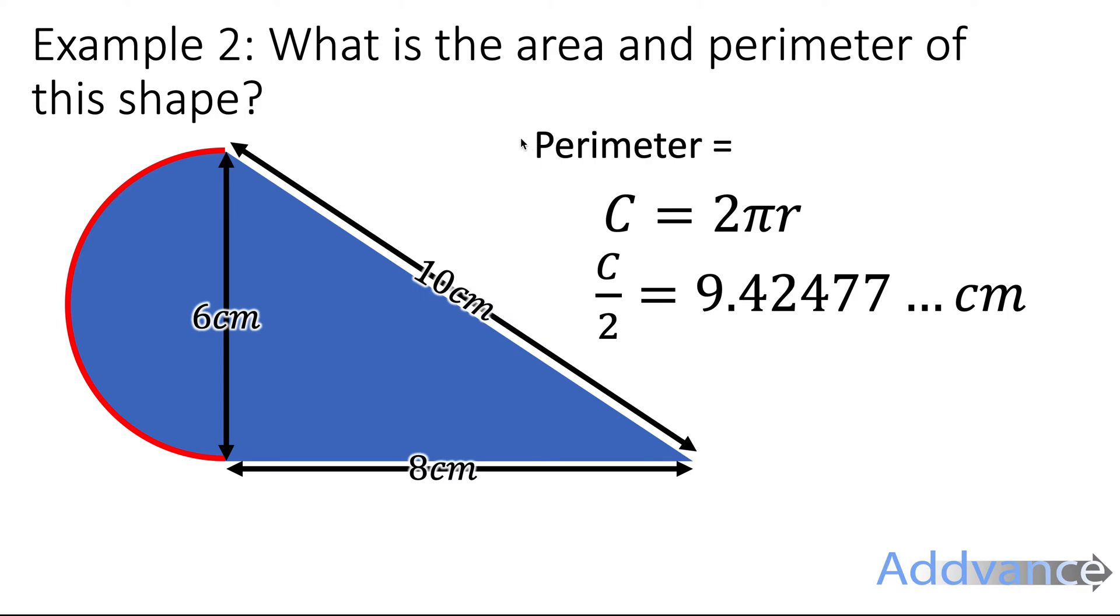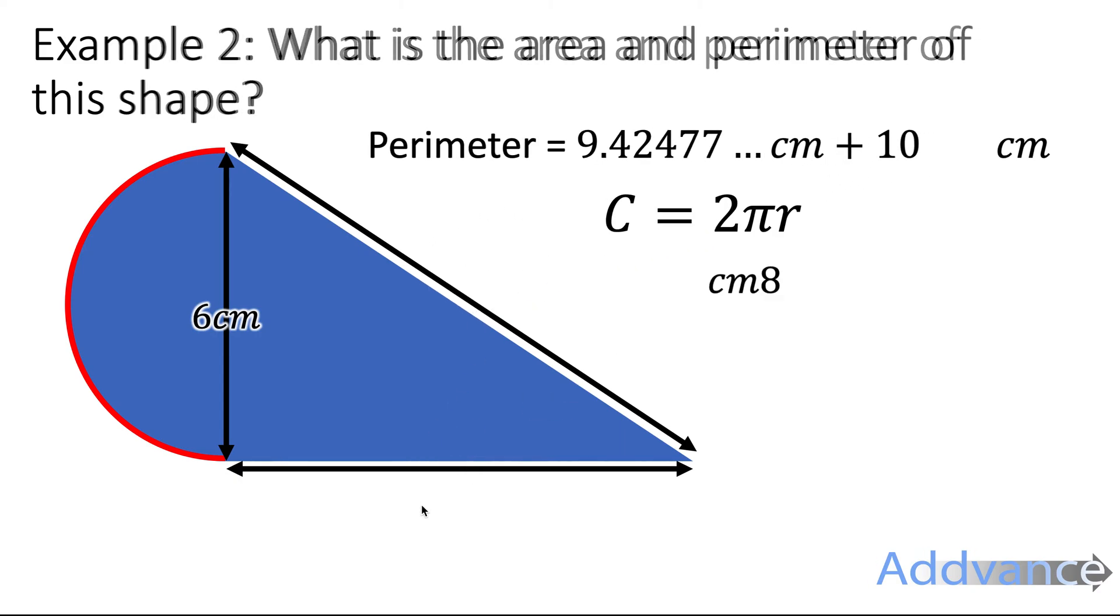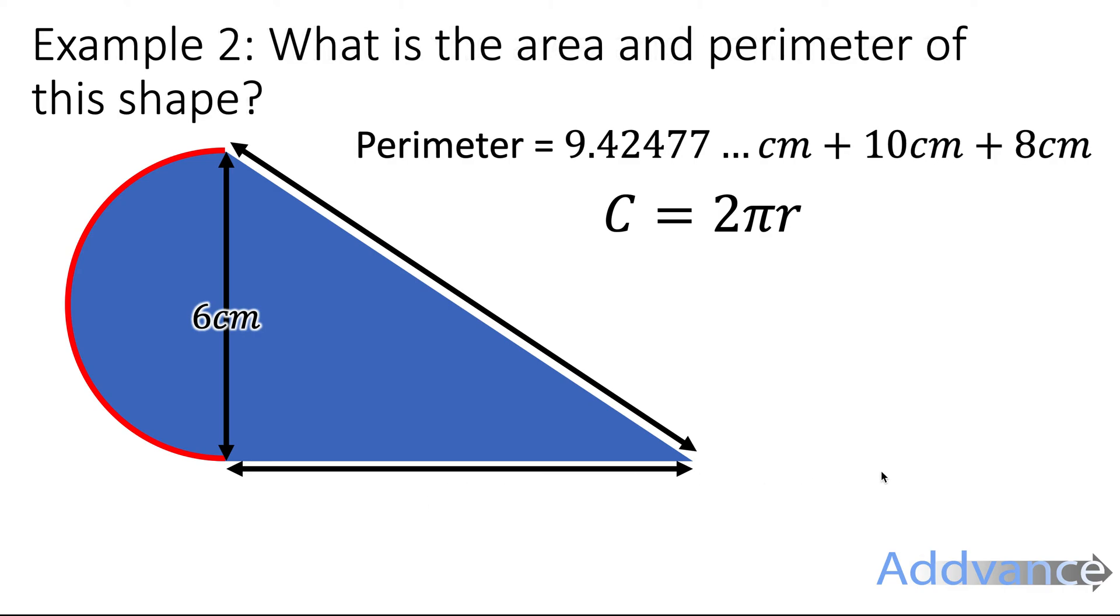So the red edge here, the red curved edge is 9.42 centimeters. But we add the other sides, 10 centimeters here and 8 centimeters. We add the lengths on the outside. We ignore the 6 centimeters here because that's not on the outside of the shape, that's not part of the perimeter.